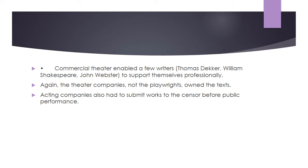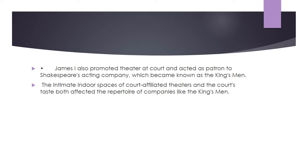Commercial theatre enabled a few writers — Thomas Dekker, William Shakespeare, John Webster — to support themselves professionally. Again, the theatre companies, not the playwrights, owned the texts. Acting companies also had to submit works to the censor before public performance. James I also promoted theatre at court and acted as patron to Shakespeare's acting company, which became known as the King's Men. The intimate indoor spaces of court-affiliated theatres and the court's taste both affected the repertoire of companies like the King's Men.